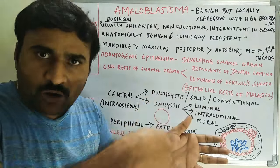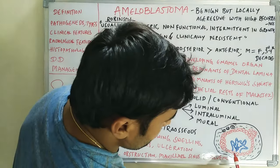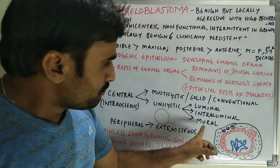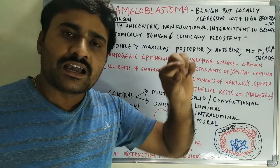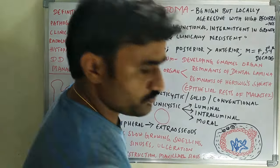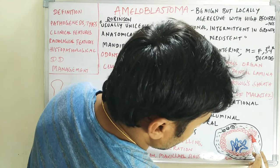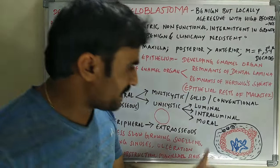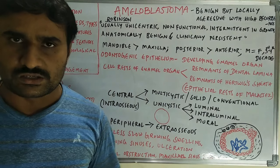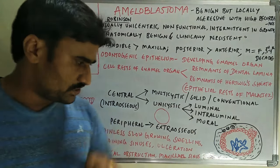Intraluminal means tumor growth into the lumen — into the hollow part. Mural means tumor growth into the connective tissue; solid islands or epithelial growth into the connective tissue is called mural. So there are three varieties of unicystic amyloblastoma. Peripheral amyloblastoma most commonly occurs in the gums, that is soft tissues.